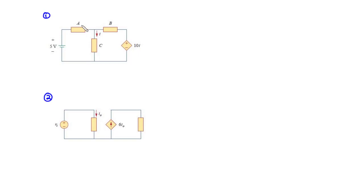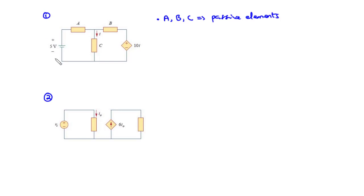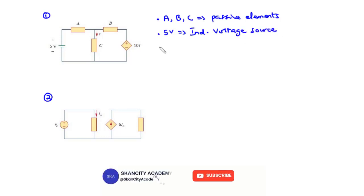For circuit one, you realize that we have elements A, B, and C — these can be considered as passive elements. We also have a five-volt source here. How do we determine whether this is an independent source or a dependent source? You realize that whenever we have a circle symbol, then this is an independent source. And since we know this is a voltage source, this five volts is an independent voltage source.